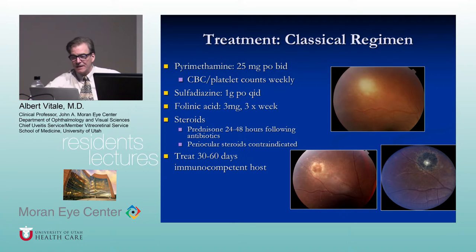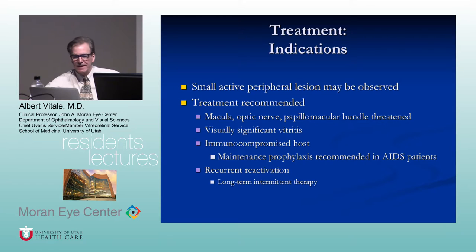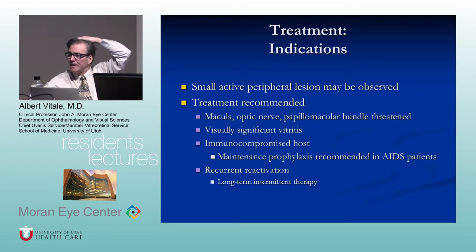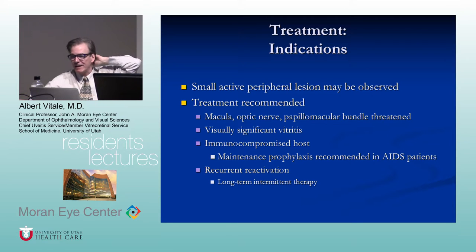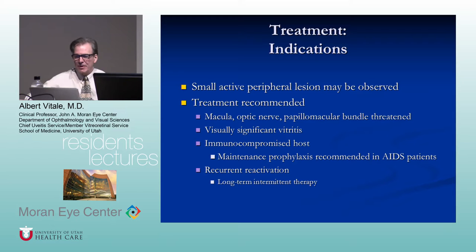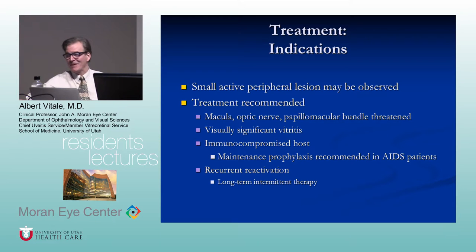This is the evolution of the lesion — they actually had a chorioretinal scar before. Who do you treat? Some small active peripheral lesions may be observed. Treatment is certainly recommended for any lesion affecting the macula, optic nerve, or large blood vessel, with significant vitritis, or in any immunocompromised patient. If an AIDS patient is immunosuppressed, they may not have a classic toxoplasma lesion — it may mimic CMV retinitis. If they have toxoplasma, image the brain because about 10-15% of those patients will have CNS toxo.